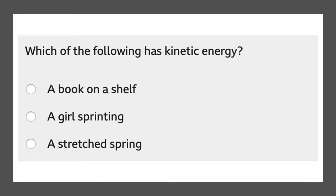Next question. Which of the following has kinetic energy? A book on a shelf, a girl sprinting or a stretched spring? So a book on a shelf is stationary. So we know it's not going to have any kinetic energy at all. So we can cross that out. A girl sprinting will have kinetic energy because there is movement.